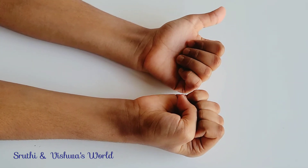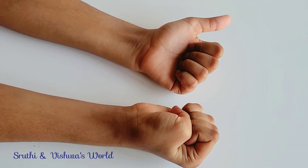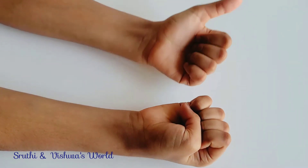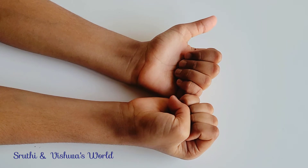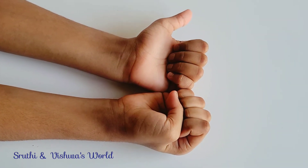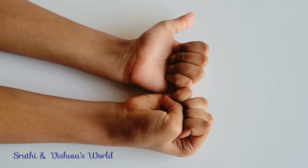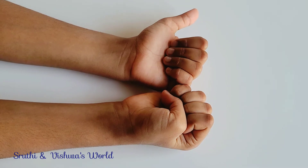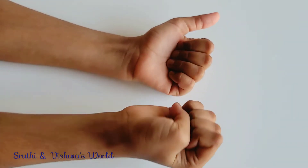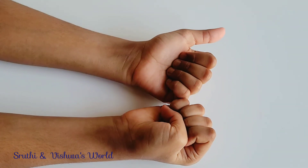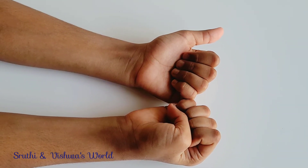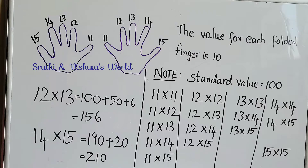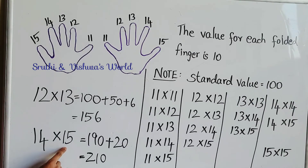Count how many folded fingers there are: 1, 2, 3, 4, 5, 6, 7, 8, 9. So 9 times 10 is 90. Remember that we already have 100 as the standard value, so 100 plus 90 is 190. The number of folded fingers on the left hand is 4 and on the right hand is 5. So we do 4 times 5 which is 20. So 190 plus 20 gives us 210. So 14 times 15 is 210.